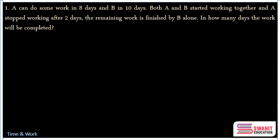The first question on your screen says: A can do some work in 8 days and B in 10 days. Both A and B started working together, and A stopped working after two days. The remaining work is finished by B alone — in how many days will the work be completed?